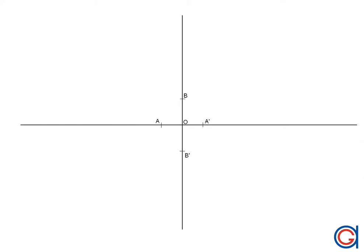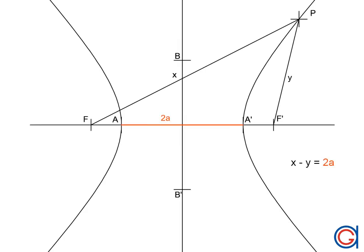Hello, today we are going to learn how to draw a hyperbola given its two axes: the transverse axis a, a prime and the conjugate axis b, b prime. We'd like to remind you of the definition of a hyperbola. A hyperbola is an open curve formed by two branches between two focal points, such that the difference of the distances to the two focal points is constant for every point on the curve. This constant is also equal to the length of the transverse axis a, a prime.